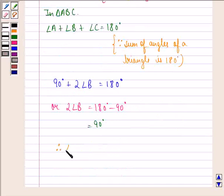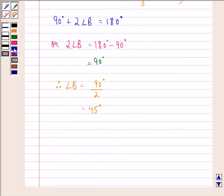Therefore angle B is equal to 90 degrees divided by 2, that is 45 degrees. And we see that angle B is equal to angle C, therefore angle B is equal to 45 degrees and angle C is equal to 45 degrees.